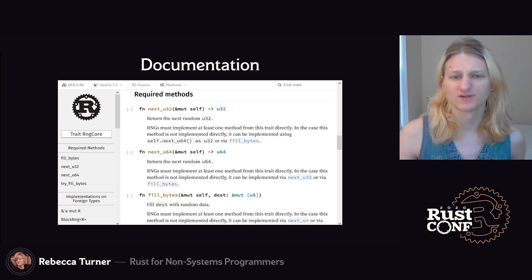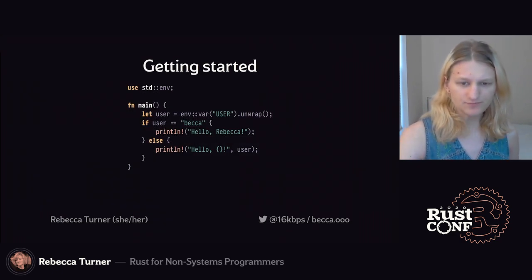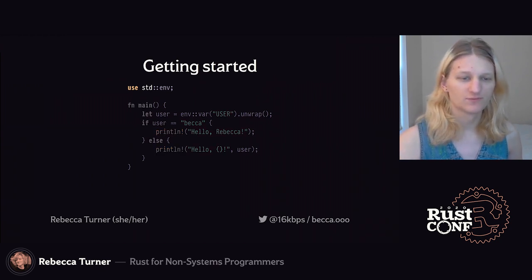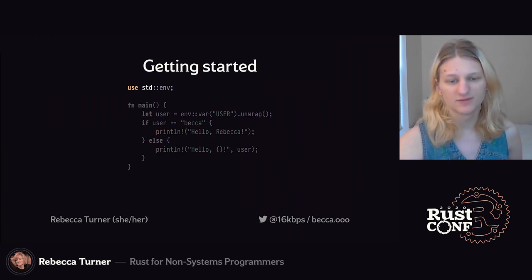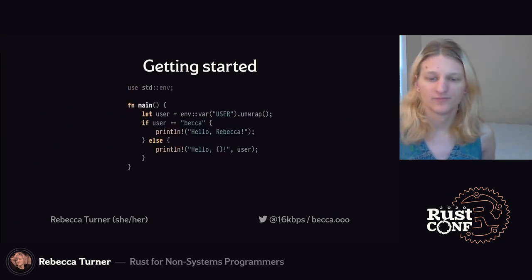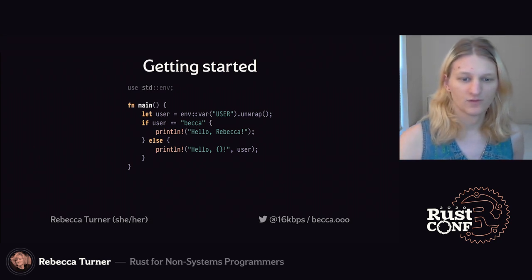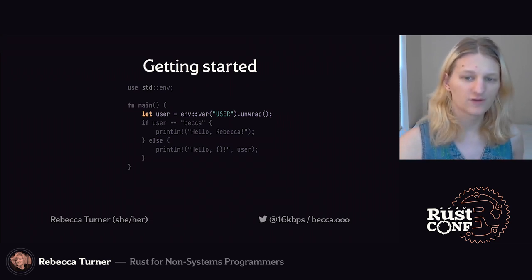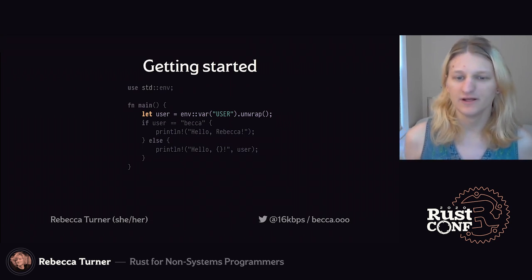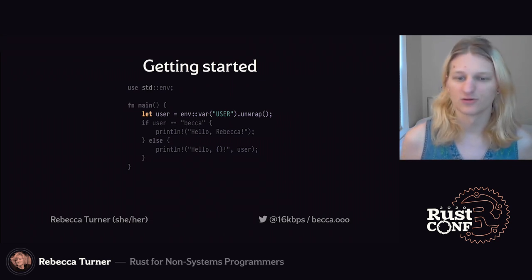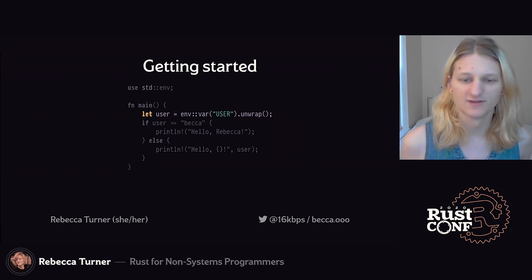Here's a pretty simple Rust program, just to show off a bit of syntax. The use statement imports names from libraries; double-colon is used as a path separator and namespacing operator. We define a function with the fn keyword — the function named main is the entry point. We call the var function in the env module and assign the value it returns to user. Rust figures out the type for us. And var returns a Result, so we have to unwrap it, which will crash if there's an error.